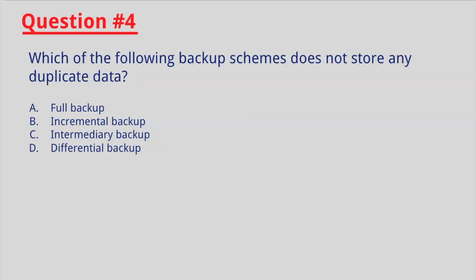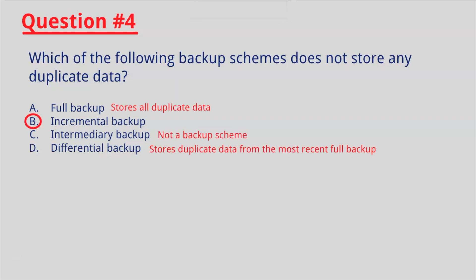Question number four: which of the following backup schemes does not store any duplicate data? If you selected B, you are correct — incremental backup. A full backup stores all duplicate data, an intermediary backup is not a backup scheme, and a differential backup stores duplicate data from the most recent full backup.